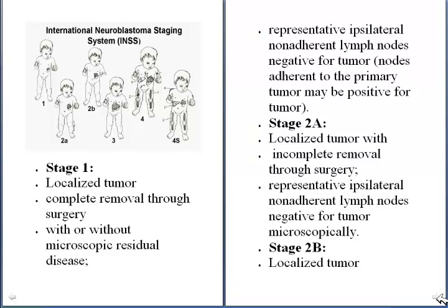As you can see in the picture, stage 1 has a localized tumor that can be completely removed through surgery, with or without microscopic residual disease. The representative ipsilateral non-adherent lymph nodes are usually negative for the tumor, while nodes adherent to the primary tumor may be positive.